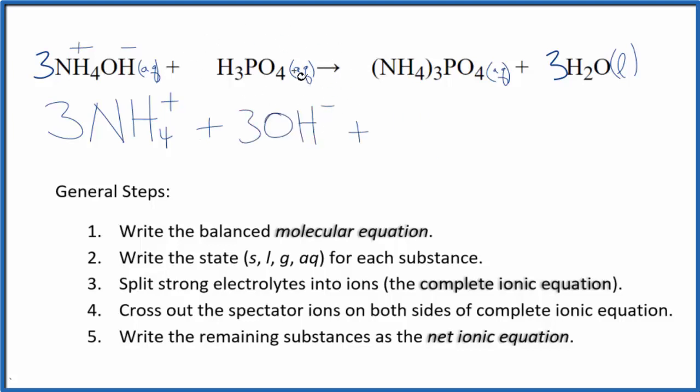For the phosphoric acid, we said that's a weak acid. So even though it dissolves and is aqueous, it's a weak electrolyte. It won't split apart. That's a good one to remember. So we're just going to write H3PO4. We're going to keep this together. These are the reactants in our complete ionic equation.